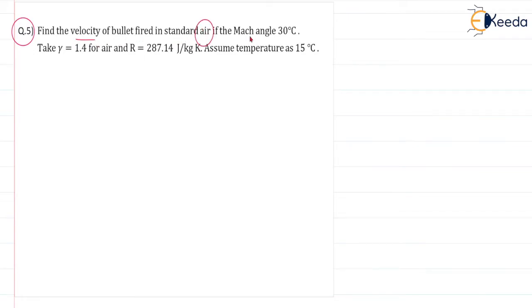If the Mach angle is 30 degrees, take gamma equal to 1.4 for air and R is 287.14 joule per kg Kelvin and temperature is 15 degrees centigrade.